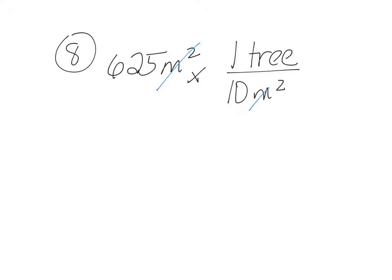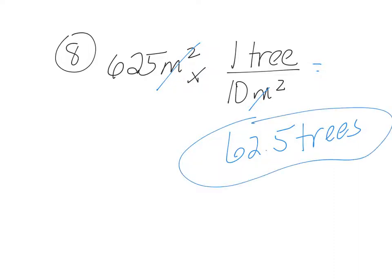Number 8. Each dwarf avocado tree needs 10 meters squared of space to grow. Calculate the number of avocado trees that the manure from the chicken coop can fertilize. That's just land space because you don't want to crowd out the trees. They don't thrive very well when they're too crowded. They need root space, they need branch space. We found out from number 7 that we have 625 meters squared of manure. Each tree, this is a proportion per tree, needs 10 meters squared of space to grow. Now our meter squared cancels out.